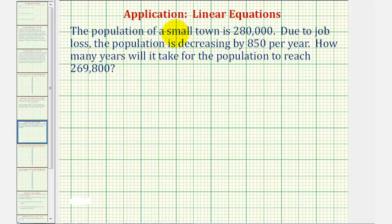Welcome to an application involving a linear equation. The population of a small town is 280,000. Due to job loss, the population is decreasing by 850 per year. How many years will it take for the population to reach 269,800?